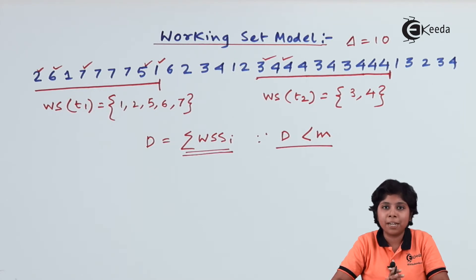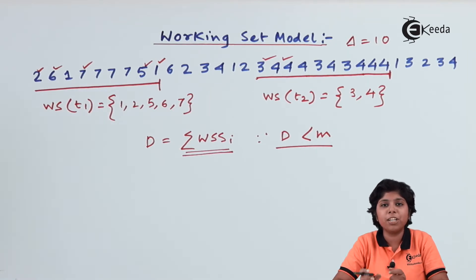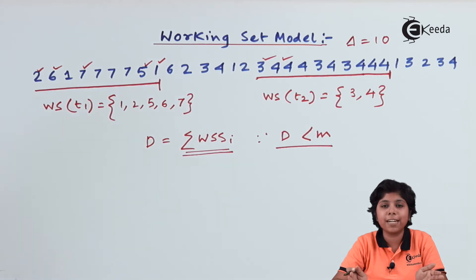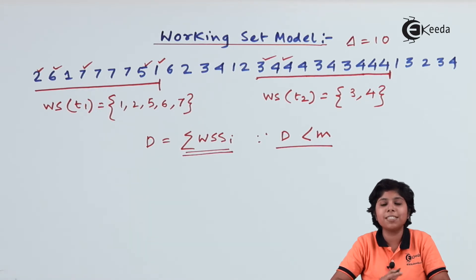The working set strategy prevents thrashing by controlling the degree of multiprogramming. If the multiprogramming degree is too high, more processes need more frames. If it is too low, processes have more frames than needed. We can manage this by determining which pages are in the working set, though it is difficult to implement because the working set window is a moving window — old references drop out as new ones come in.